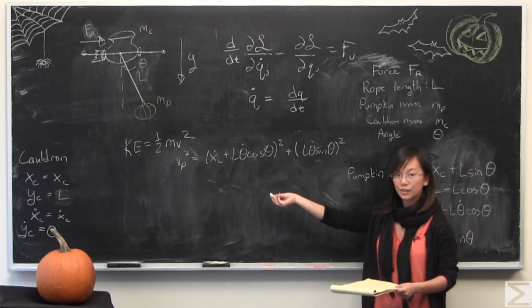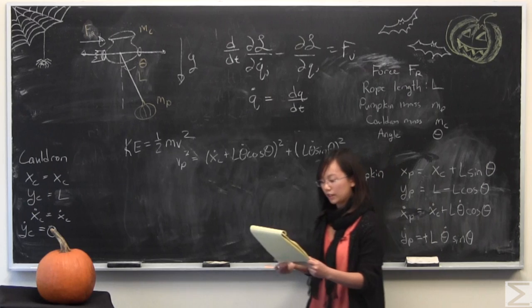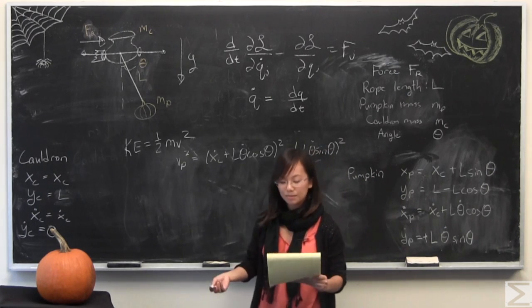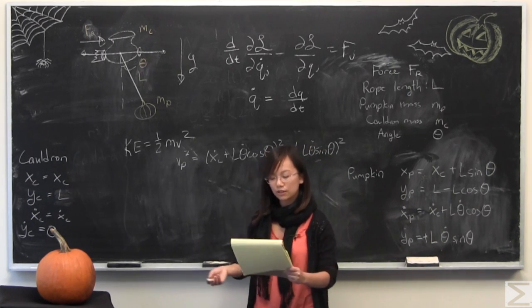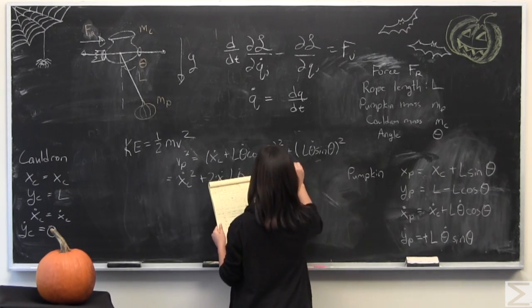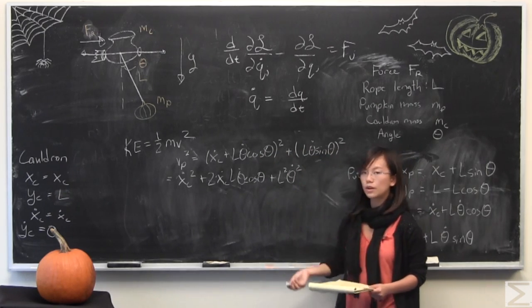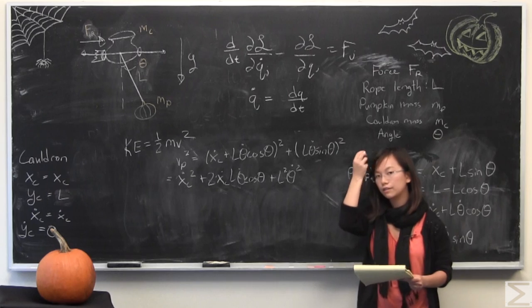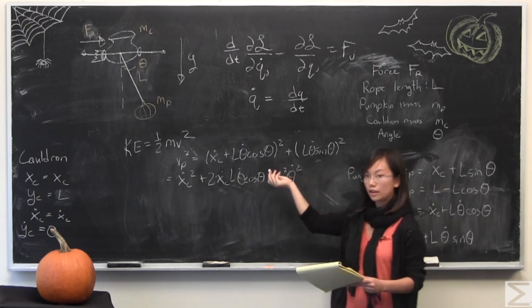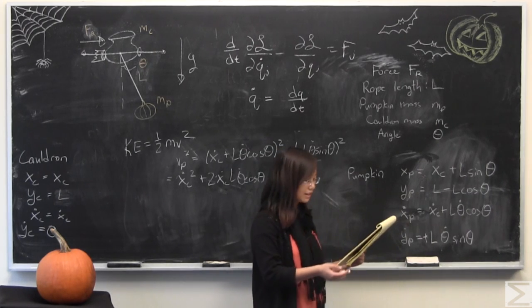This is the velocity of the pumpkin. I've put in both the x component and the y component. I'm going to skip the foiling steps and just show you what it looks like. This L squared theta dot squared comes in because we have a sine squared and a cosine squared theta. If you add those together, they equal one by that identity.